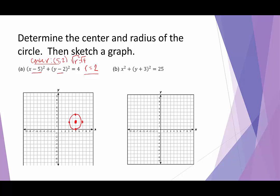In example B, the center of the circle is h, k. Since there's nothing being subtracted by x — we represent nothing with a 0 — so the center is 0, negative 3. The radius squared is 25, so the radius is the square root of 25, which is 5.